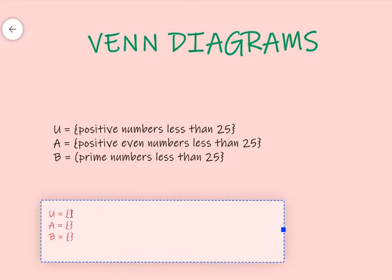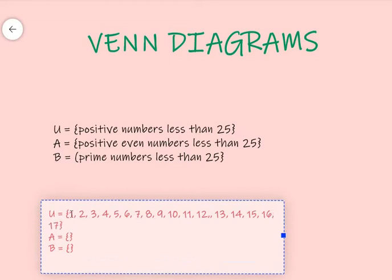So, all positive numbers less than 25. Are we going to include 25 in our set? No. Because we want all the numbers that are less than 25 and all the positive numbers less than 25. So, we'll go 1, 2, 3, 4, 5, 6, 7, 8, 9, 10. It's very lengthy, so we're going to just list all of them: 14, 15, 16, 17, 18, 19, 20, 21, 22, 23, and 24. Because remember, we will not include 25 in our answer.